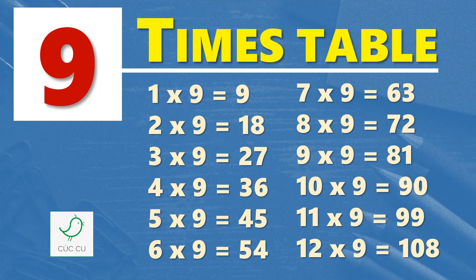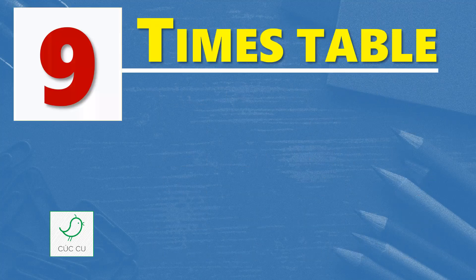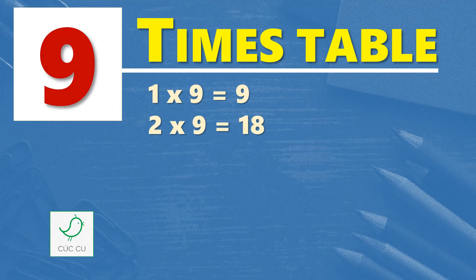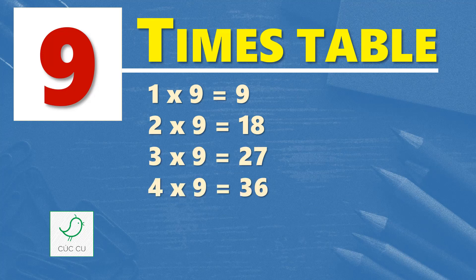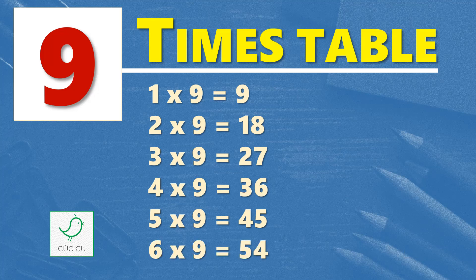Multiplication table of 9. 9 times table. 1 times 9 is 9, 2 times 9 is 18, 3 times 9 is 27, 4 times 9 is 36, 5 times 9 is 45, 6 times 9 is 54.